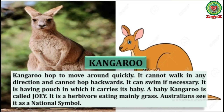Number one is kangaroo. Kangaroos hop to move around quickly. They cannot walk in any direction and cannot hop backwards. They can swim if necessary. They have a pouch in which they carry their baby — a baby kangaroo is called a joey. It is a herbivore, eating mainly grass. Australians see it as a national symbol.